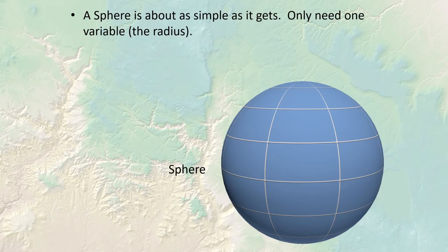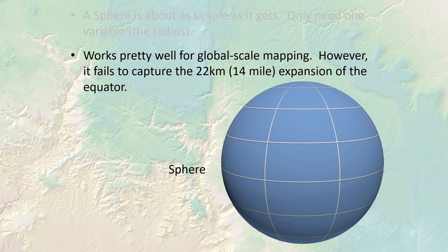The simplest model would be a sphere — you only need one variable, a radius. A sphere is essentially a constant distance from a single point, and it's pretty easy to project from a sphere onto a flat surface. We do use the sphere sometimes, and it works well for global-scale mapping. However, it doesn't capture the 14-mile equatorial expansion, which impacts precise measurements of areas and distances.